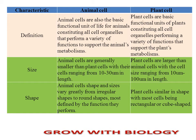Welcome students to Grow with Biology. Today we will talk about the basic differences between animal cell and plant cell. Before moving to the difference, first we should remember that there are many similarities between a plant cell and an animal cell. An animal cell is the basic functional unit in an animal, and similarly, a plant cell is the basic functional unit of the plant. These cells of either animals or plants will constitute to form the tissues and then develop into other organs and organ systems.